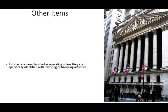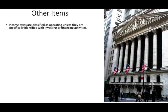Income taxes is another item. Income taxes are generally an operating activity unless they are specifically identified with an investing or financing activity. For example, if you paid taxes because you sold a particular asset and generated a gain or loss, it's an investing activity and the taxes related will be listed there. Similarly, if you raised money and paid taxes, that would be considered financing.